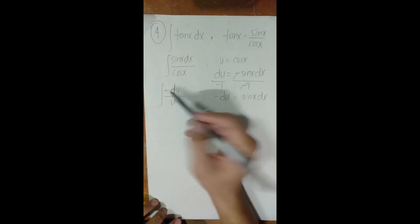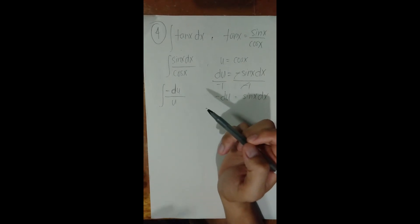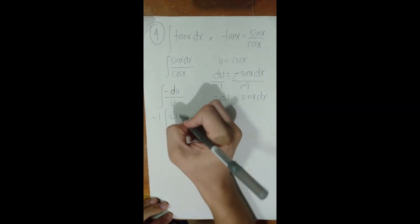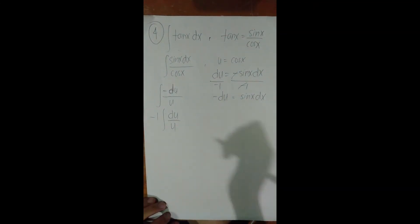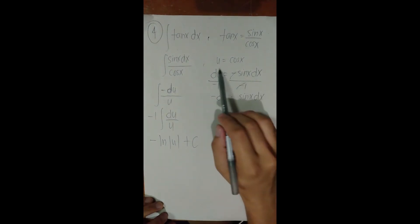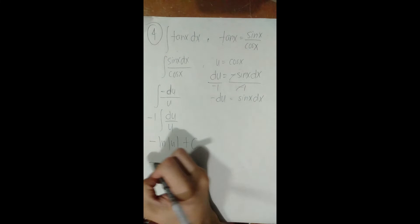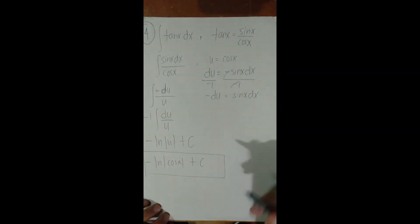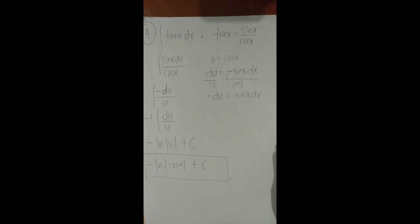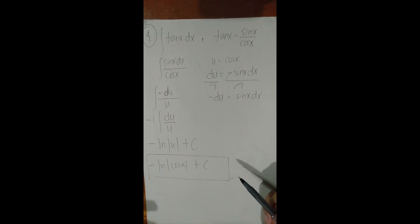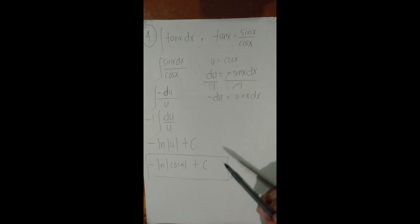There's a negative sign inside, so we factor out −1 (a constant), giving −1 · integral of du/u. The integral of du/u is ln|u|, so the result is −ln|u| + C. Bringing back u = cos(x): the final answer is −ln|cos(x)| + C. This is actually a derived formula for the integration of tan(x) — it comes from substitution using the trig identity.